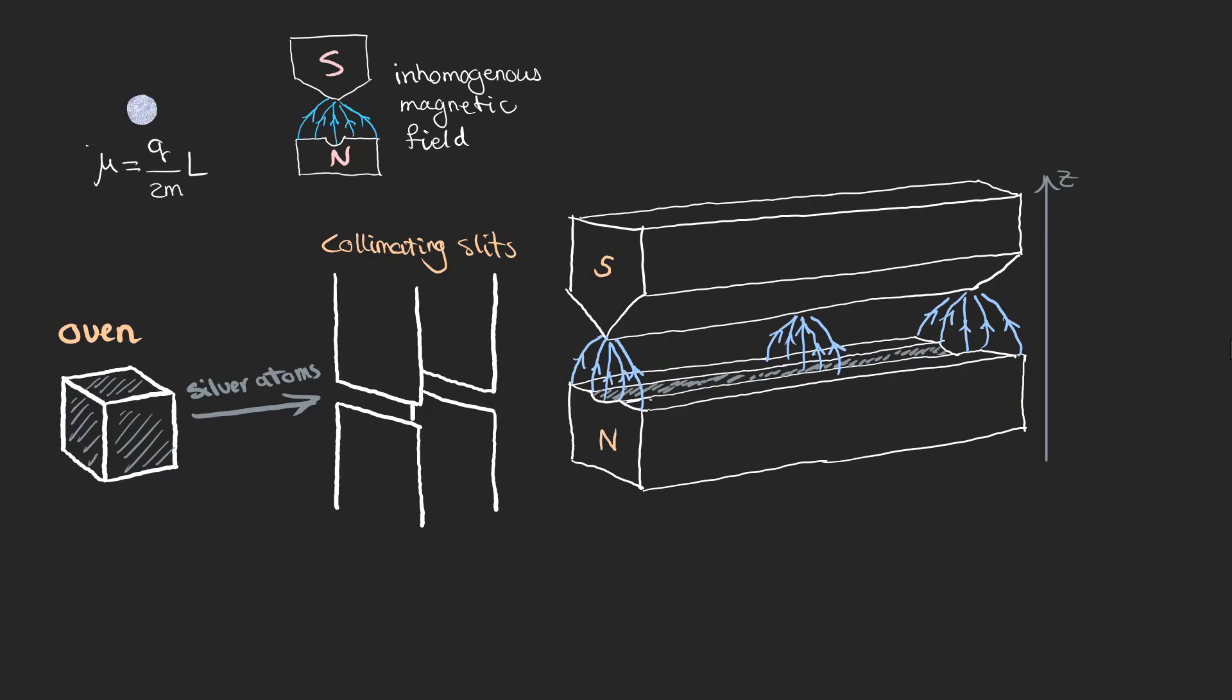In 1922 from a classical perspective, the magnetic moment of a silver atom was thought to arise from the orbital motion of its electrons around the nucleus. We already know that silver has a single unpaired electron in its outermost 5s orbital. Classically, this electron's orbital motion was expected to produce a net magnetic moment for the atom.